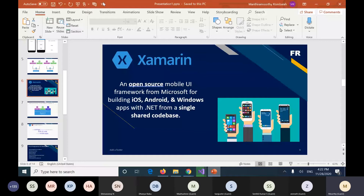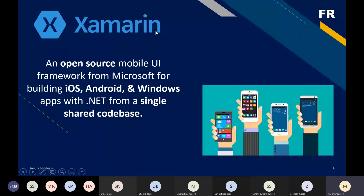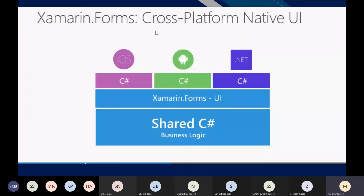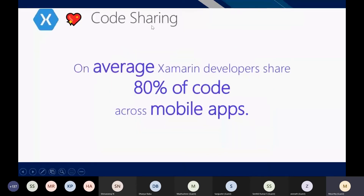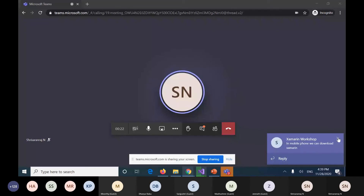This is the Xamarin intro. There is a common file called Xamarin Forms where we can write code for both iOS, Android, and Windows platforms. Then we have the shared C# business logic for backend code. If we need to achieve any specific platform code, we can also write for those individual files to achieve the native experience. Most Xamarin developers share an average of 80% of code across their mobile apps using the same code for Android, iOS, and UWP. I will quickly wind up the session with a simple example.